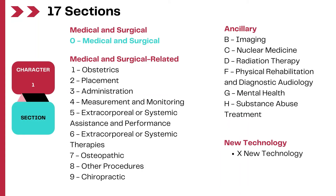There are 17 sections overall in PCS, and in this video we are going to talk about the medical and surgical section specifically. Remember, codes from multiple sections can be reported together based on the procedures performed — for example, you may report a code from the medical and surgical section and also an obstetrics section together depending on the procedure performed.